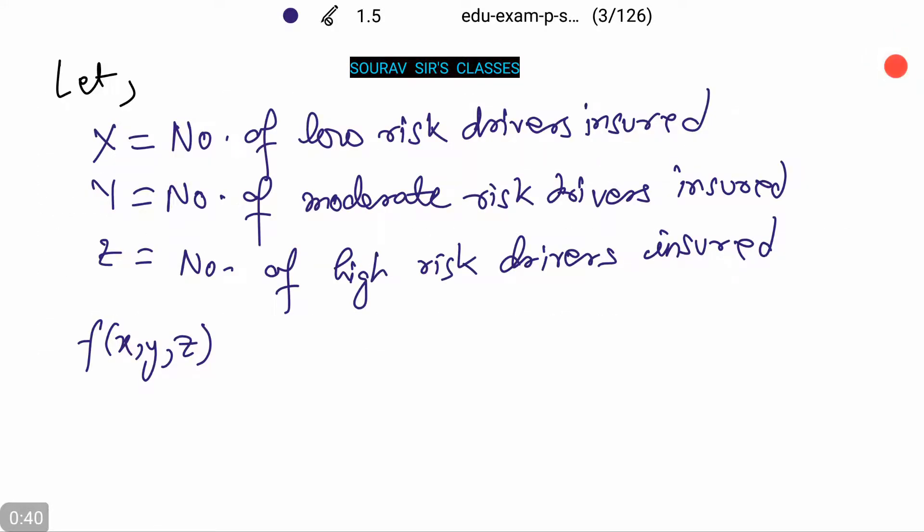Now let X equal the number of low-risk drivers insured, Y equal the number of moderate-risk drivers insured, and Z equal the number of high-risk drivers insured.